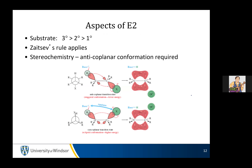What helps E2 go faster? Generally, having a tertiary leaving group is better than secondary, which is better than primary, because you're going to have a more substituted bond — and that's more stable. Zaitsev's rule generally applies, so you're generally going to make the more stable double bond. In terms of stereochemistry, we're going to need to make that pi bond.